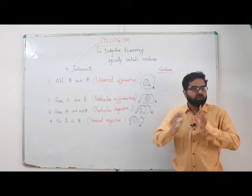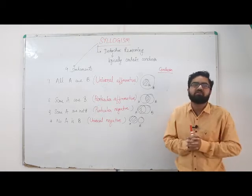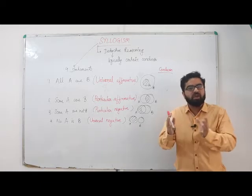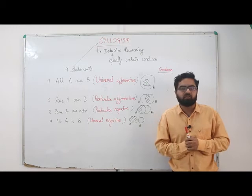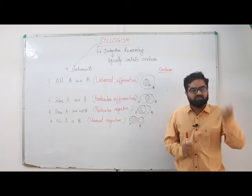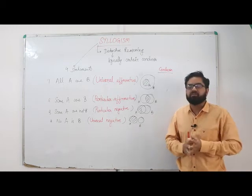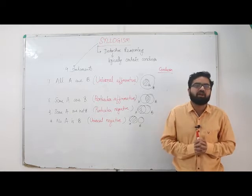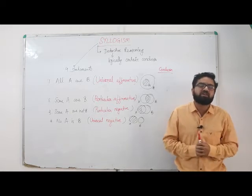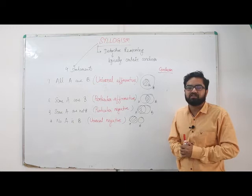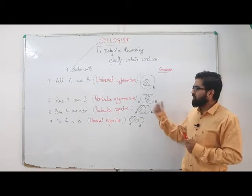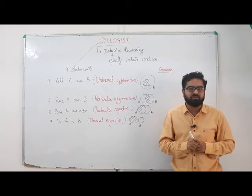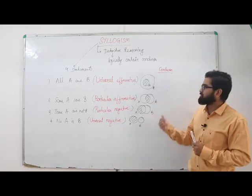We're not certain about the remaining 49 people - they may or may not be from Delhi. Similarly, for 'Some A are not B,' if one person is from Delhi and I don't know about the other 49 people, I can say 'Some persons in this room are not from Mumbai.' That's how we understand these statements.